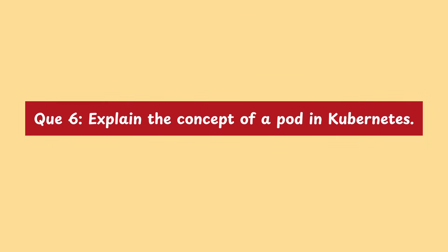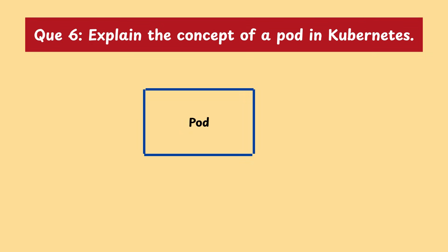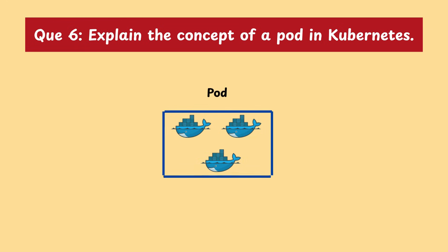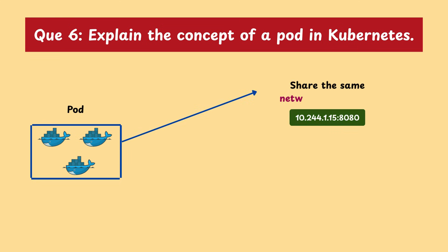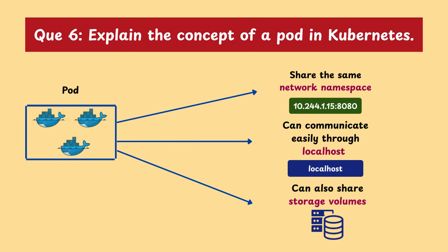Moving on with our next question: explain the concept of a pod in Kubernetes. A pod is the smallest unit in Kubernetes. It's like a wrapper around one or more containers that need to work together closely. All containers inside a pod share the same network namespace, that is IP and ports. They can also communicate easily through localhost and can share storage volumes.